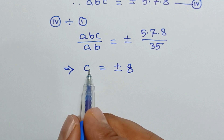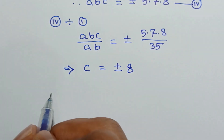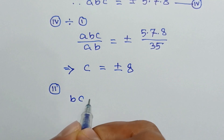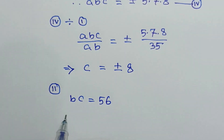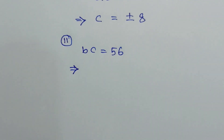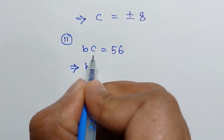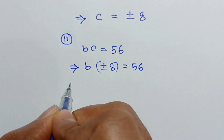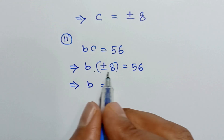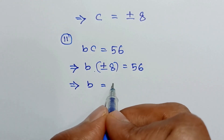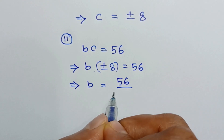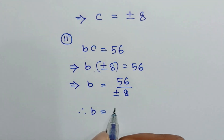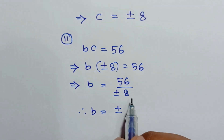Now if we substitute this value of c into equation number 2, we get bc is equal to 56, or b times plus or minus 8 is equal to 56. Dividing both sides by plus or minus 8, we get b is equal to 56 over plus or minus 8, so the value of b is equal to plus or minus 7.